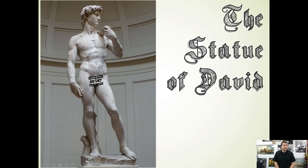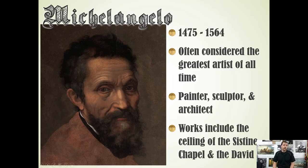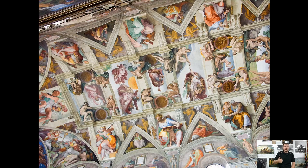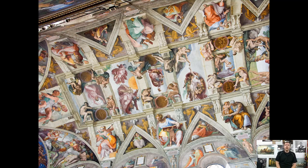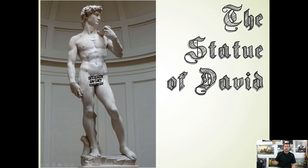Now we're going to get into the artists. The first one, considered by many to be the greatest artist of all time, is Michelangelo. He was a painter, a sculptor, and an architect. His most famous works are the Sistine Chapel and the Statue of David. For the Sistine Chapel, he would build scaffolding right up under the ceiling and lay on his back painting. The Statue of David was an amazingly detailed statue that really showed what you could do when going for realism.